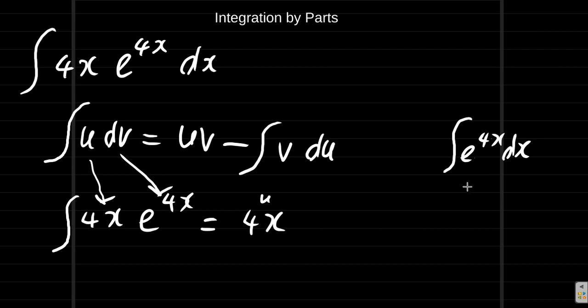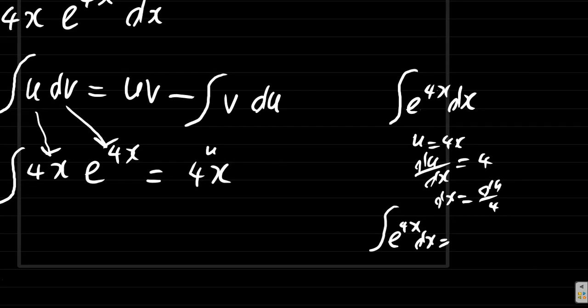e to the 4x dx: let us say that u is equal to 4x, and du by dx is equal to 4. So the integral of e to the 4x dx is equal to